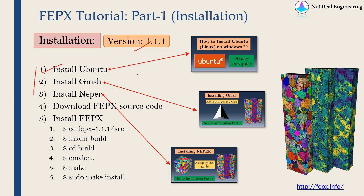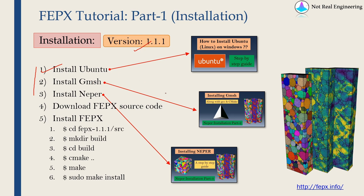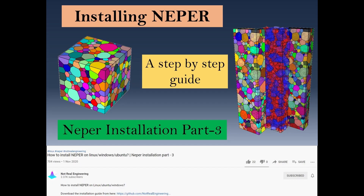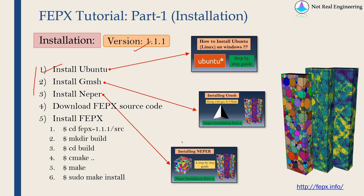If you have a Linux computer, you can start with step 2, which is to install Gmesh. I have a separate video about how to install Gmesh. And finally, you have to install NEPER — I also have a separate video on this channel for that. Installing Gmesh and NEPER is not that straightforward, so please check those videos carefully and follow every step. Once you have NEPER installed and working, you have to download the FEPX source code and then install it using these commands.